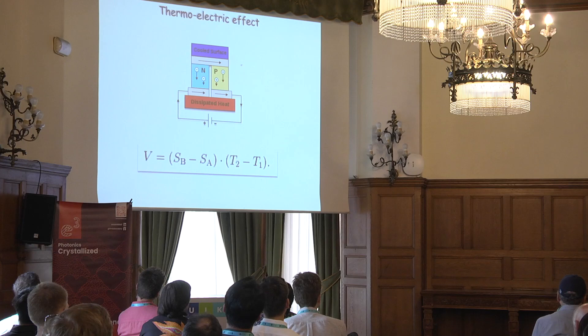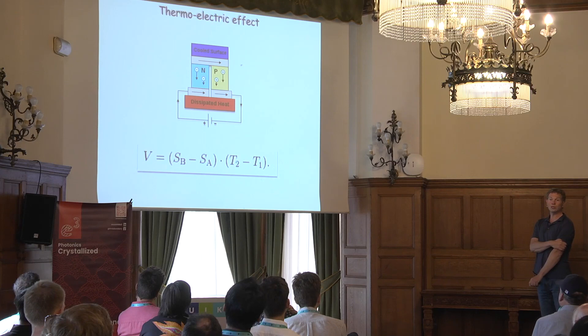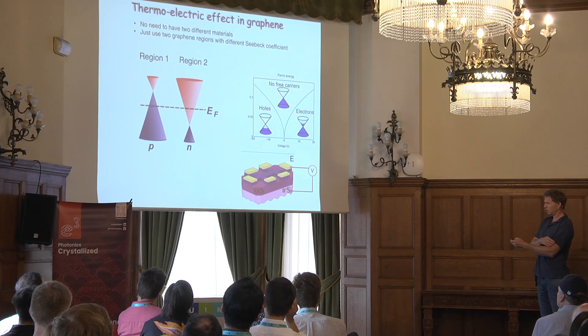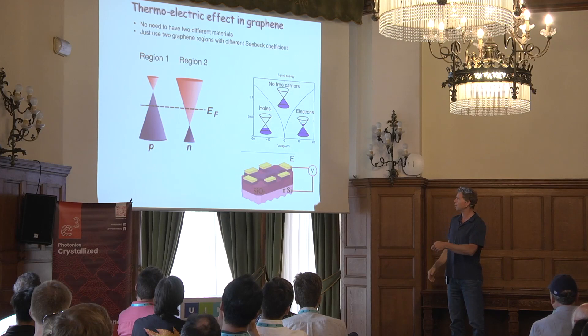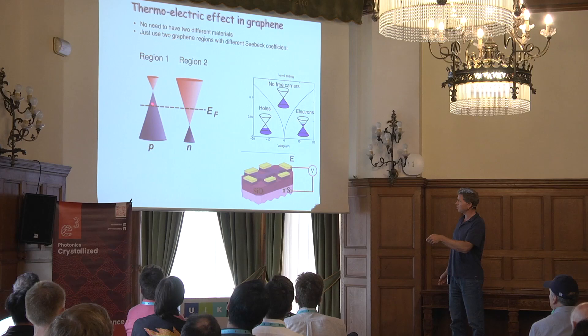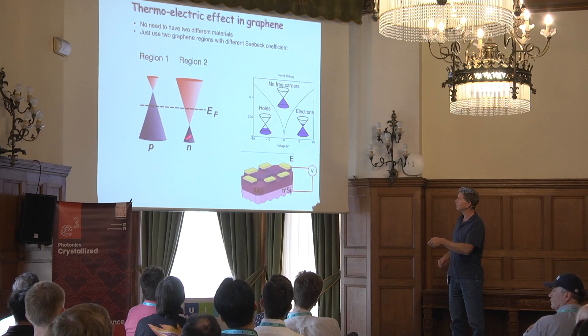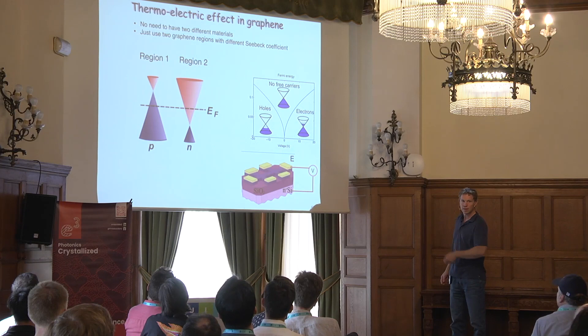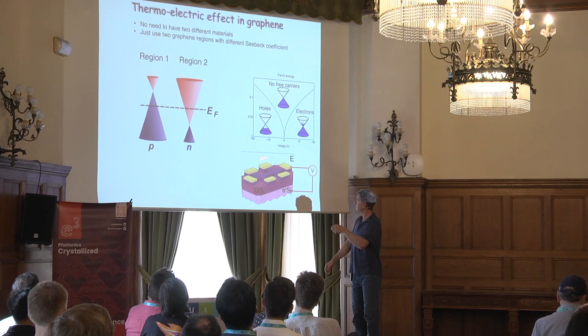In two-dimensional materials, I don't need two different materials. I can do it with the same material — I just need a different doping to make a different Seebeck coefficient. I use different doping. So I have graphene where in region one I have P-type doping with the Fermi energy below the Dirac point, and on the right side I have N-type doping, giving me a P-N junction. I can do this with a gate — so this is a simple picture of that geometry: graphene with contacts, doped silicon on the bottom.